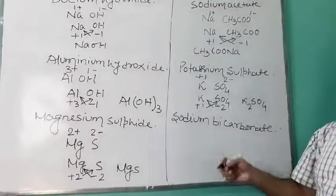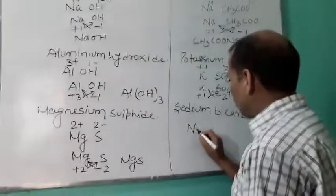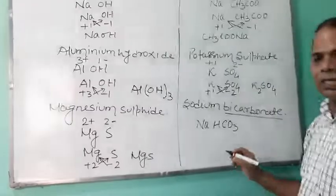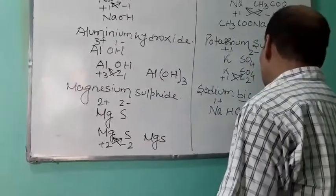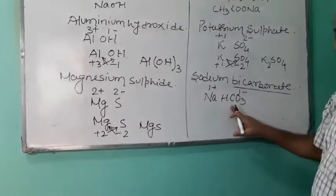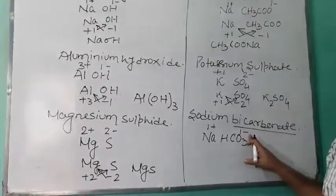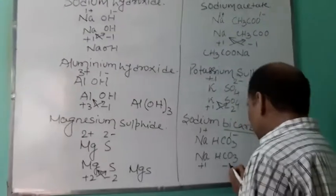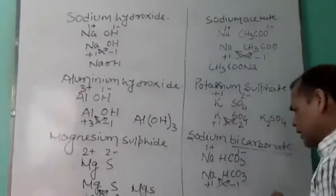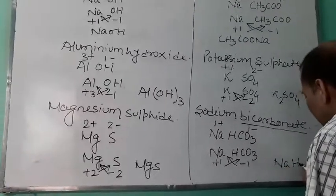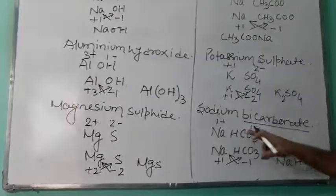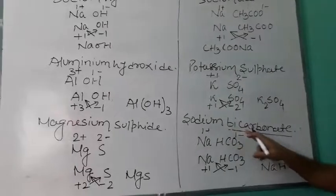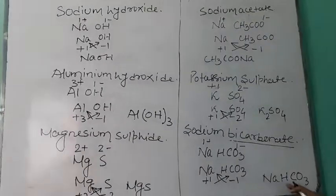Sodium bicarbonate, also called sodium hydrogen carbonate. Sodium symbol is Na; bicarbonate or hydrogen carbonate is HCO3. Sodium has one unit of positive charge; bicarbonate has one unit of negative charge. Write Na, HCO3, plus one, minus one, and cross each other. The formula is NaHCO3.